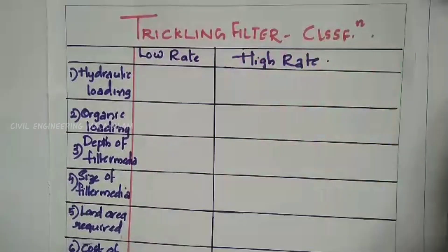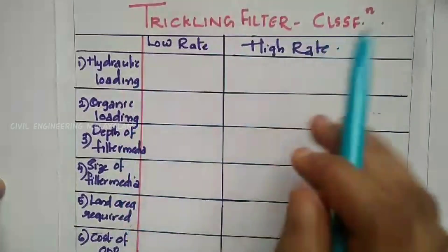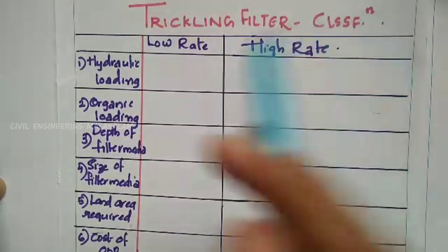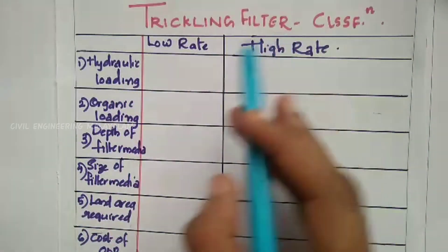We will talk about comparison terms in the tutorial. Here are 10 points comparing low rate and high rate trickling filters.